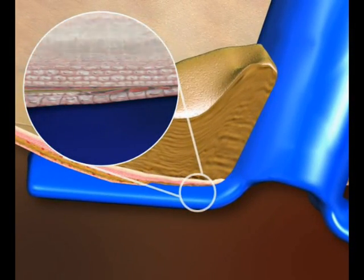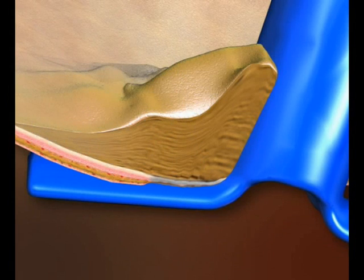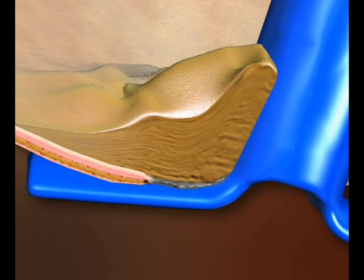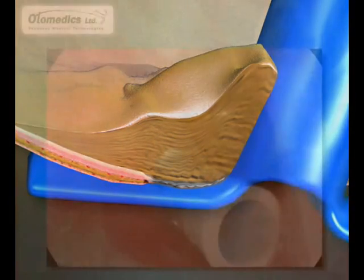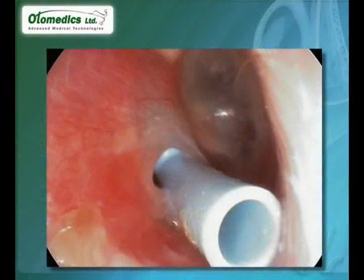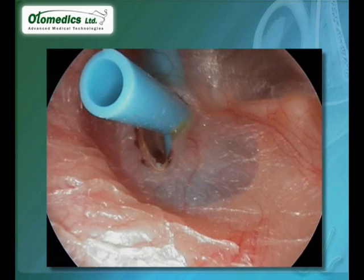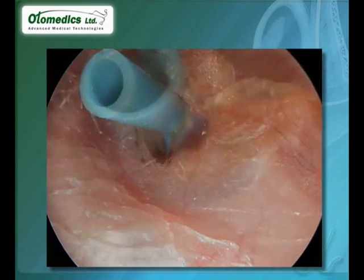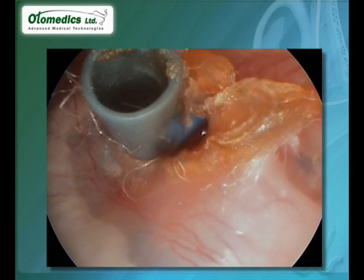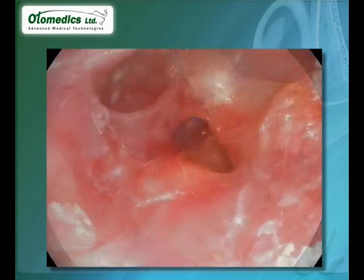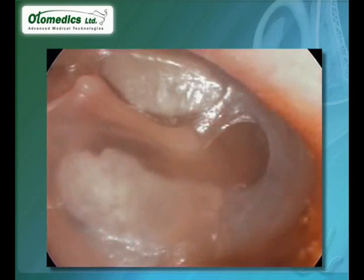This mechanism also occurs in T-tubes, with pressure concentrating on the rim area and creating a wide perforation due to necrosis. In 15 to 20 percent of T-tubes, the enlarged perforation becomes permanent. The longer the tube is in place, the higher the rate of permanent perforation and thinning of the eardrum.